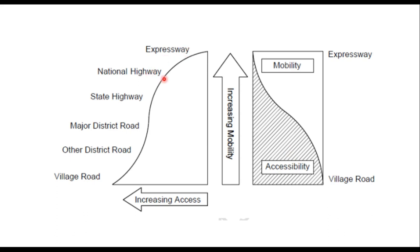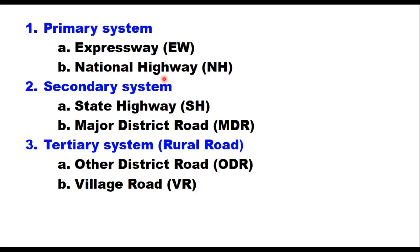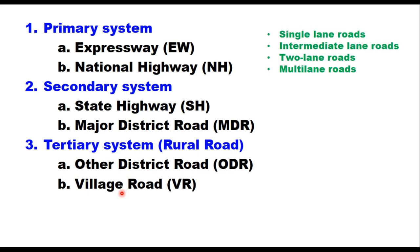The present system of road classification is a modified classification system as given in the third 20-year road development plan. Roads are now classified into three classes: the primary system, which includes expressways and national highways; the secondary system, comprising state highways and major district roads; and the tertiary system, which consists of rural roads like other district roads and village roads. Rural roads can further include single lane, intermediate lane, two lane, and multi-lane roads.